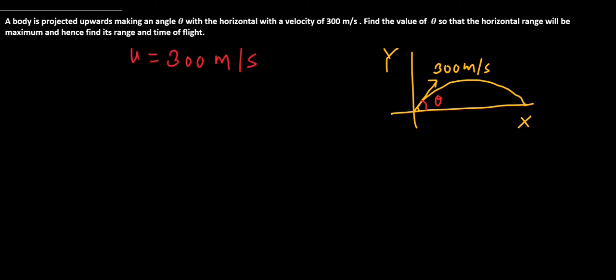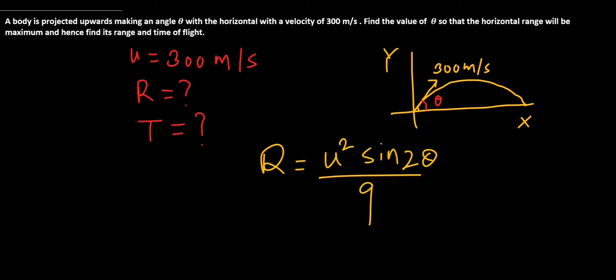We don't know the value of range and the value of time of flight. The horizontal range formula is R = u² sin2θ / g. The range is maximum when sin2θ equals 1, which gives theta equal to 45 degrees.